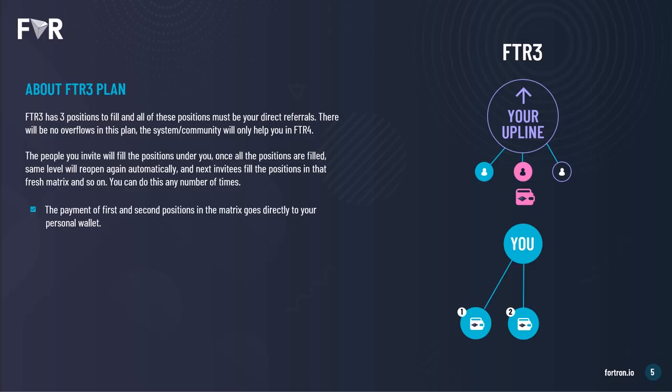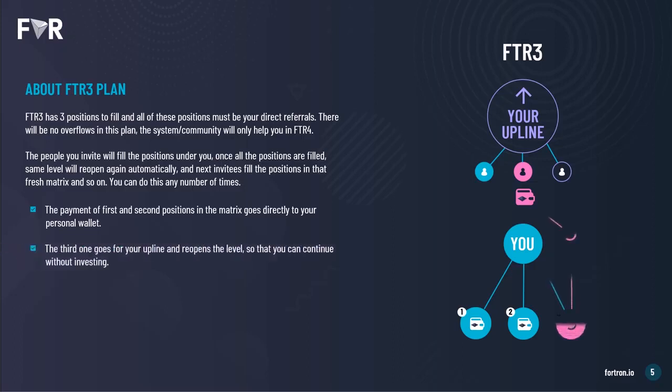The payments at the first and second positions in the FTR3 matrix go directly to your personal wallet. The third one goes to your upline, and reopens the level so that you can continue without investing.